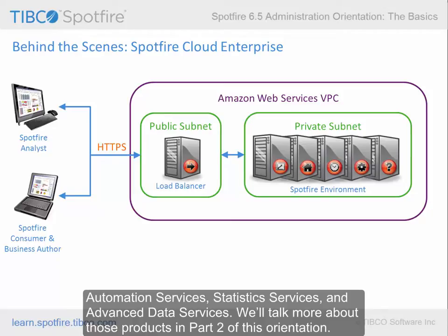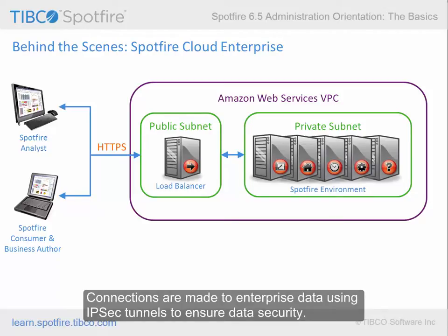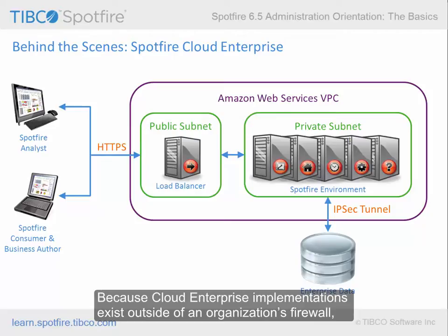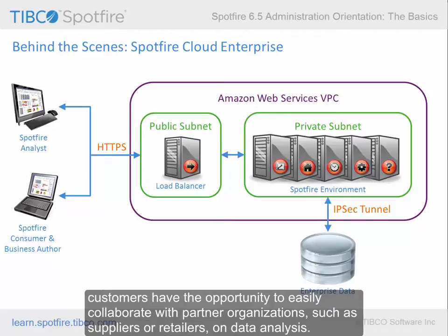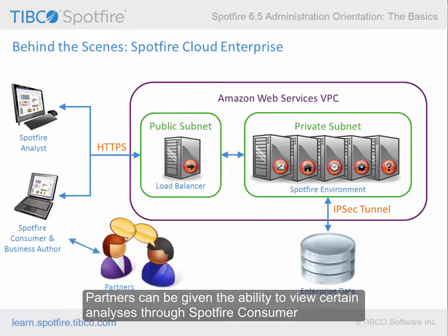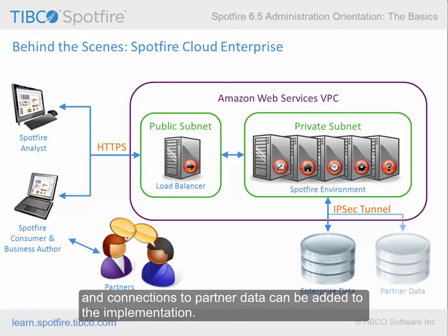We'll talk more about those products in Part 2 of this orientation. Connections are made to enterprise data using IPsec tunnels to ensure data security. Because Cloud Enterprise implementations exist outside of an organization's firewall, customers have the opportunity to easily collaborate with partner organizations, such as suppliers or retailers, on data analysis. Partners can be given the ability to view certain analyses through Spotfire consumer, and connections to partner data can be added to the implementation.